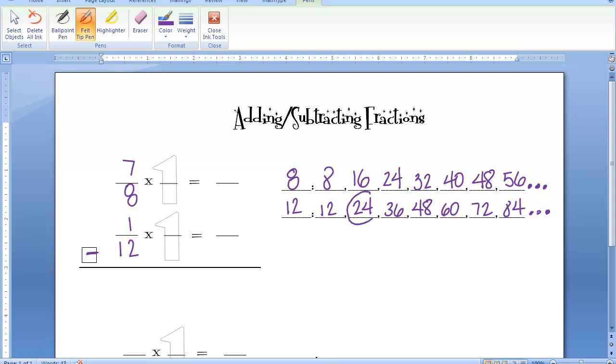Circle the ones they have in common. And of course, all you have to do is circle the lowest one that they have in common. So 24 is our common denominator. It's our least common multiple, which gets used as the lowest common denominator.